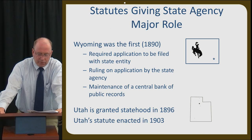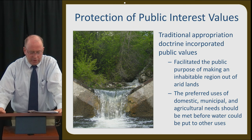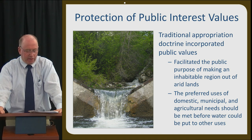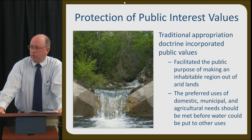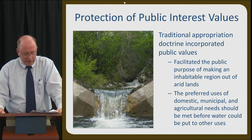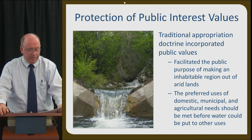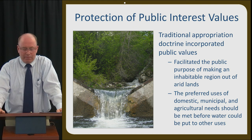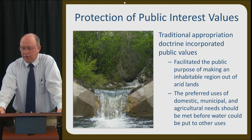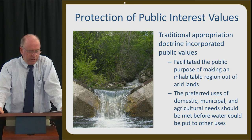Utah became a state in 1896 and its water statute was enacted in 1903. In some ways, the traditional appropriation doctrine incorporated public values. A fundamental tenet of prior appropriation law was that land and water estates were separate, and that water could be removed from its natural location and used beneficially elsewhere. This facilitated the public purpose of making an inhabitable region out of arid lands. There were preferred uses under the traditional appropriative law which embodied a public sentiment that domestic, municipal, and agricultural needs should be met before water could be put to other uses.